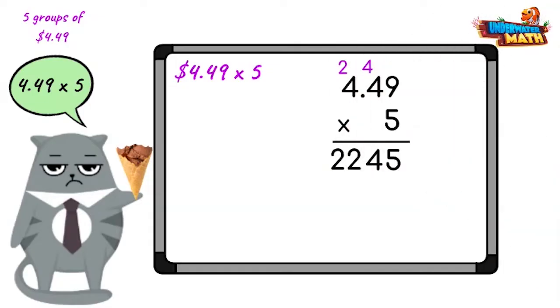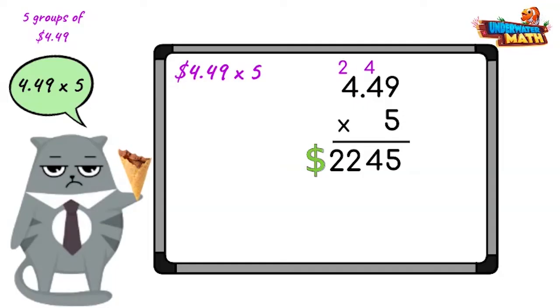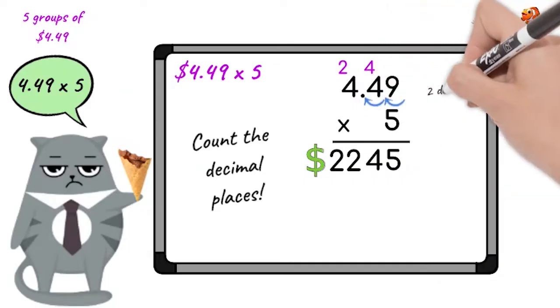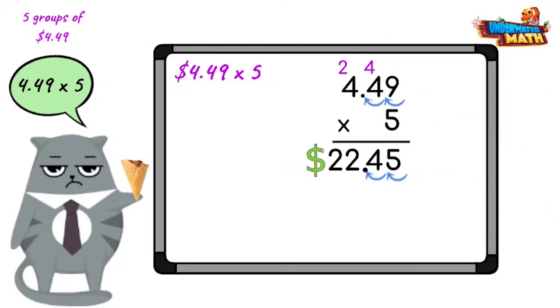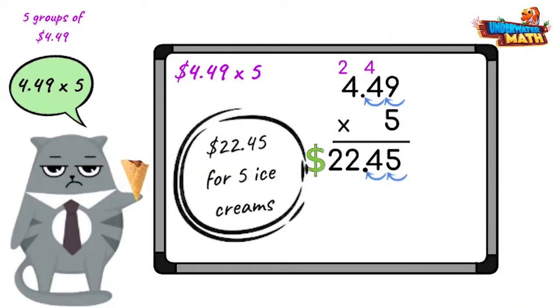Great, we've done it. That'll be 2,245 dollars. Not so fast, Grumpy Kitty. We need to place the decimal point. Now to do this, we count the number of digits from the right that the decimal sits, and we place our decimal the same number of digits from the right in our answer. That'll be 22 dollars and 45 cents for the five ice creams. Oh, but look, there's a sale right meow.